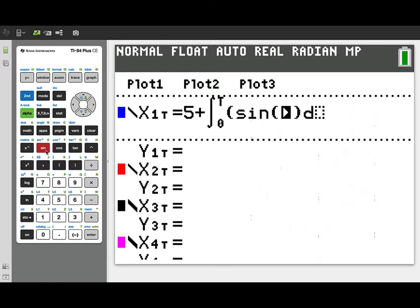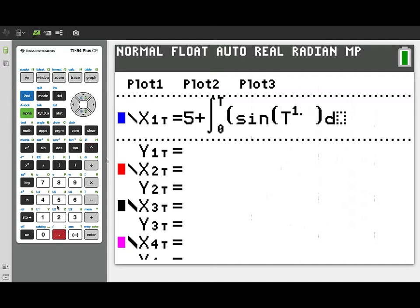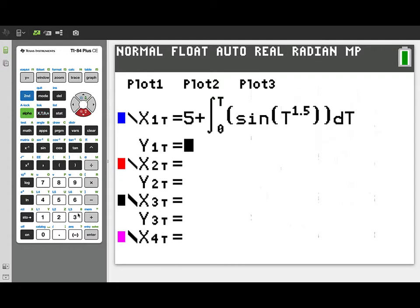Now, that was the sine of t to the 1.5 power. We'll just enter that. You'll notice I'm using t both as my variable of integration and then the upper limit of integration. That's maybe not the best symbolic practice, but it does not confuse the calculator.